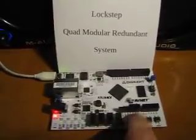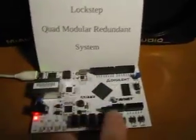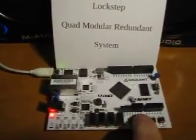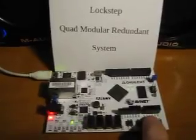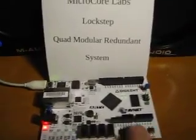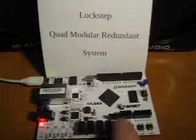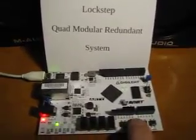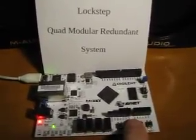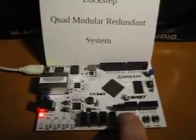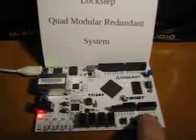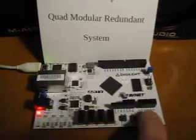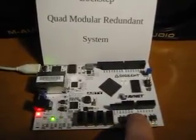For the next test, we will insert errors into the rebuilding broadcast address. This will stop a healthy module from successfully broadcasting its local RAM, ROM, and register information over the broadcast bus. The module's voter will immediately detect this discrepancy, take it out of lockstep, and attempt to rebuild itself. As you can see, when we stop asserting the errors, the module can rebuild itself and rejoin the lockstep.